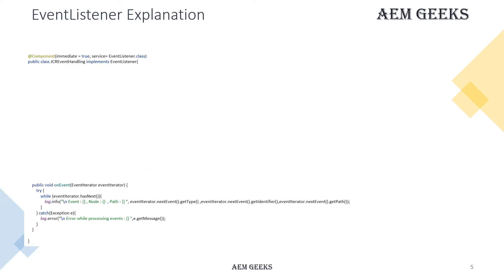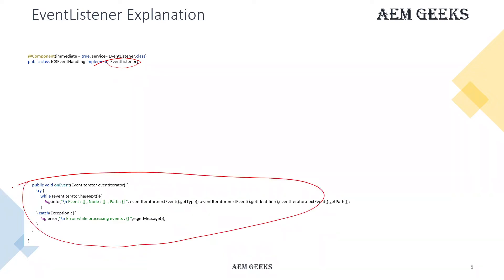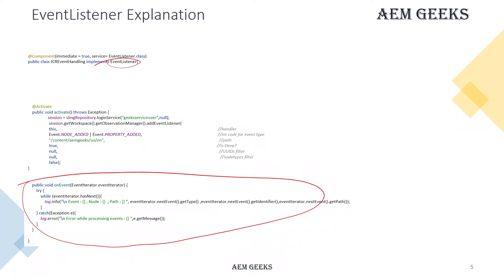To write the event handler, you have to implement the EventListener interface. As soon as you do that, you must implement the onEvent method, which is the event handler. However, after writing the event handler, you still need to register it — you have to define what events it will listen to and what the behavior will be. You register your listener using the observation manager.